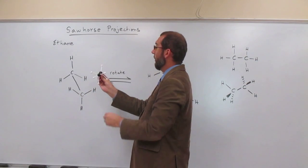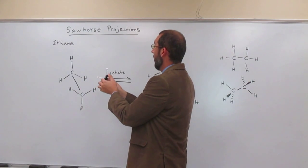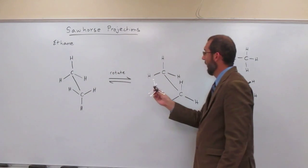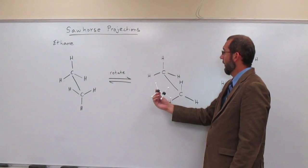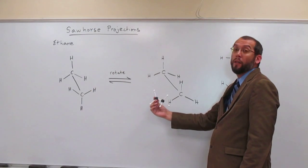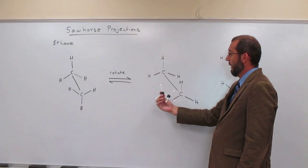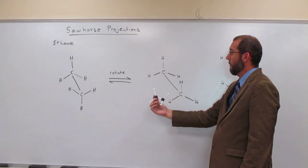And then remember what we said. We can rotate around sigma bonds. So we're going to rotate like that, and we're going to show it again like that. So hopefully you guys can do that same procedure that we did over there and identify which carbons and which hydrogens we're looking at.